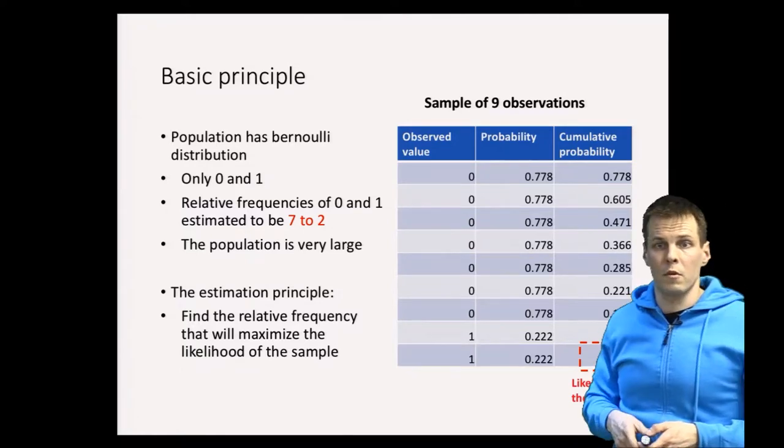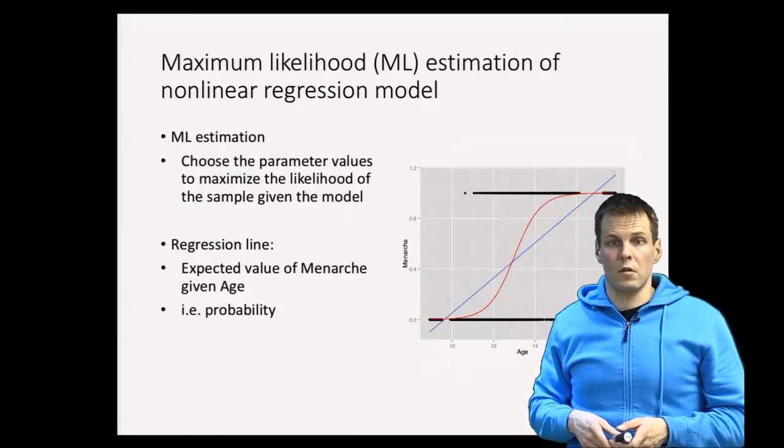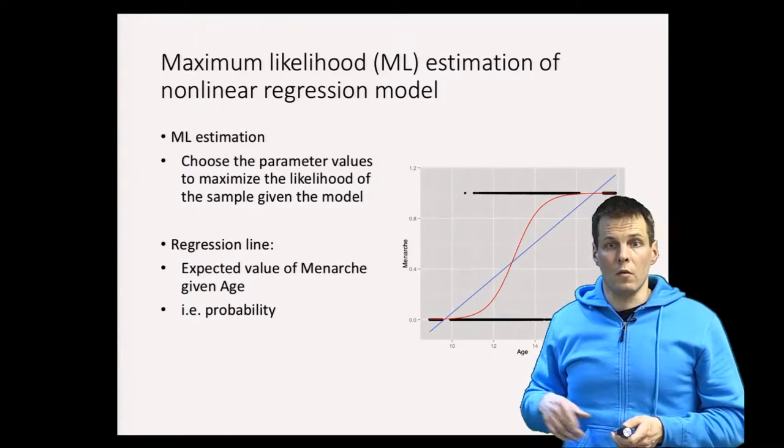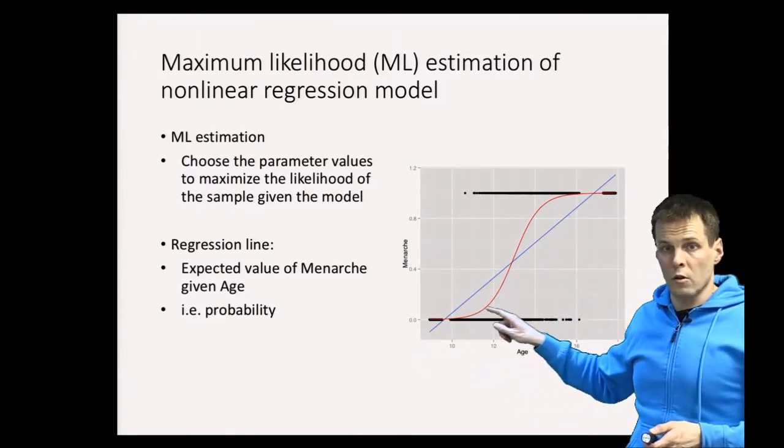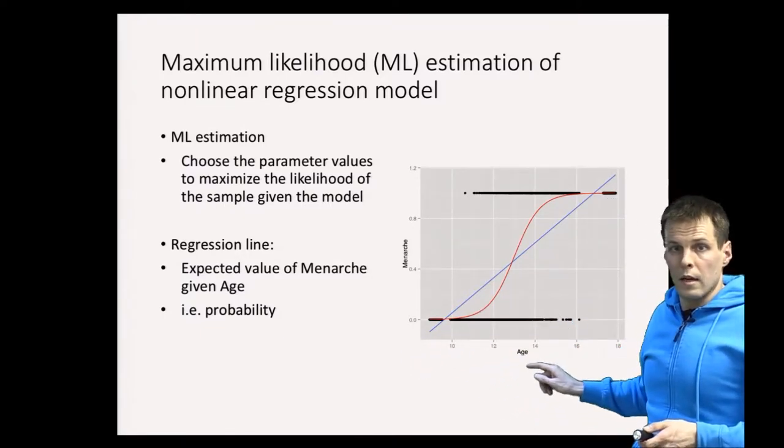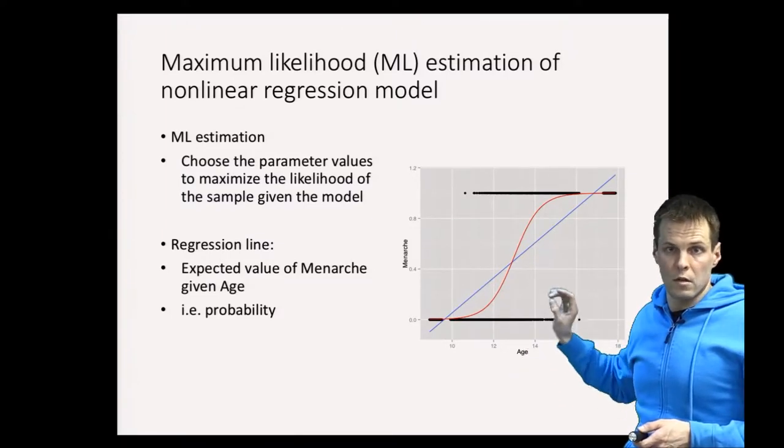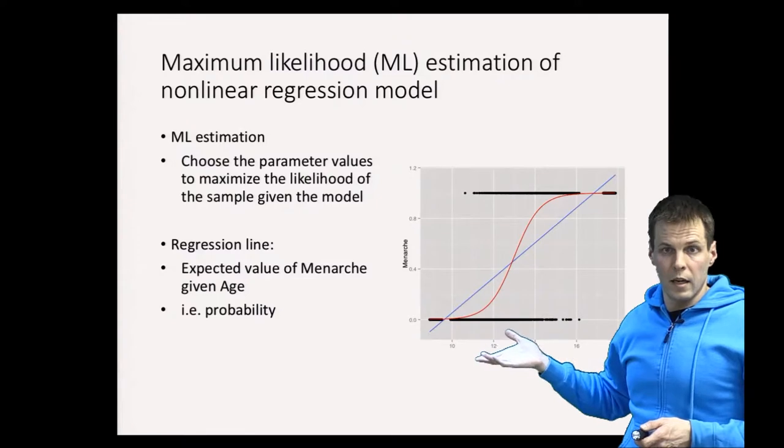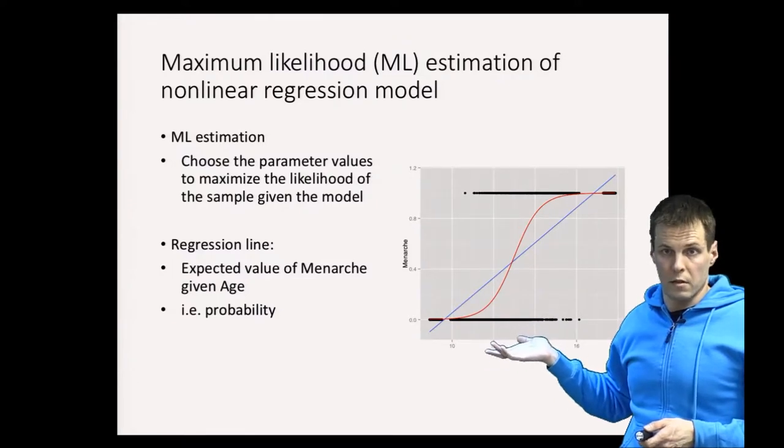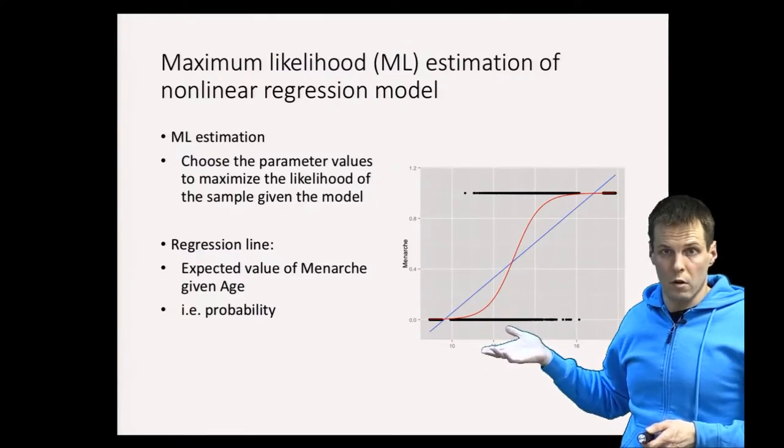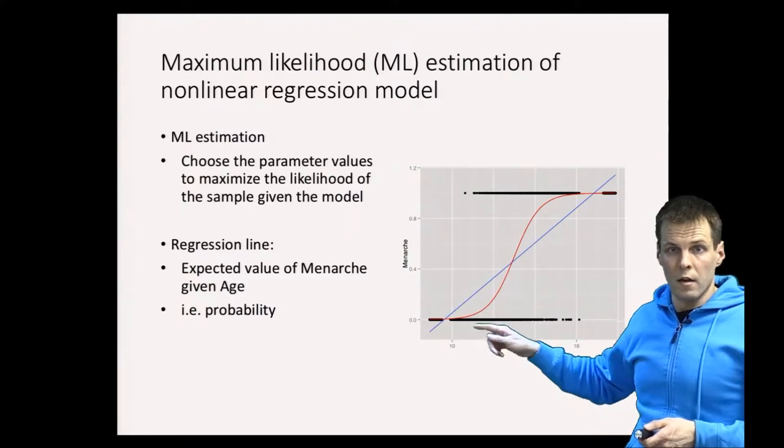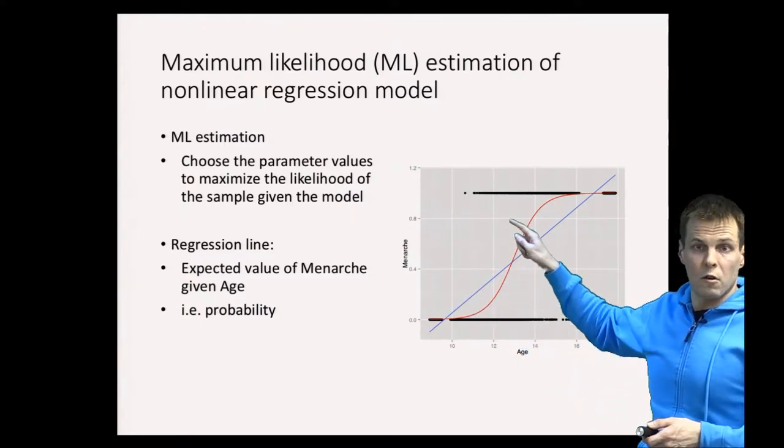This principle is applied to logistic regression analysis. The idea is that we calculate, using this logistic curve and the known ages and menarche status of these girls, the individual likelihoods for the observations. Then we use those individual likelihoods to find the best possible logistic curve for the data.